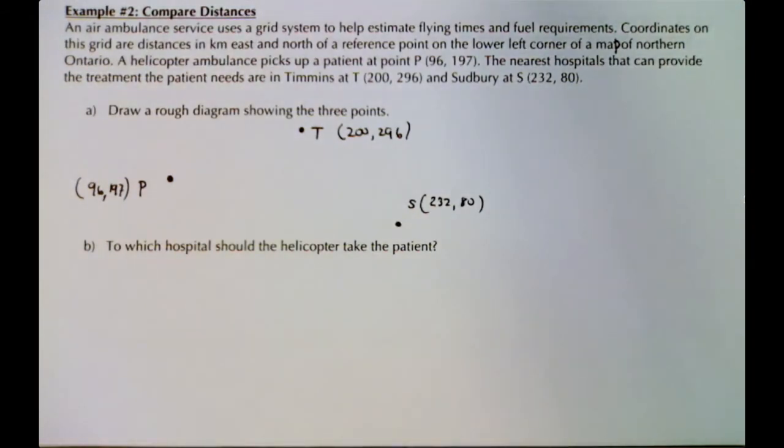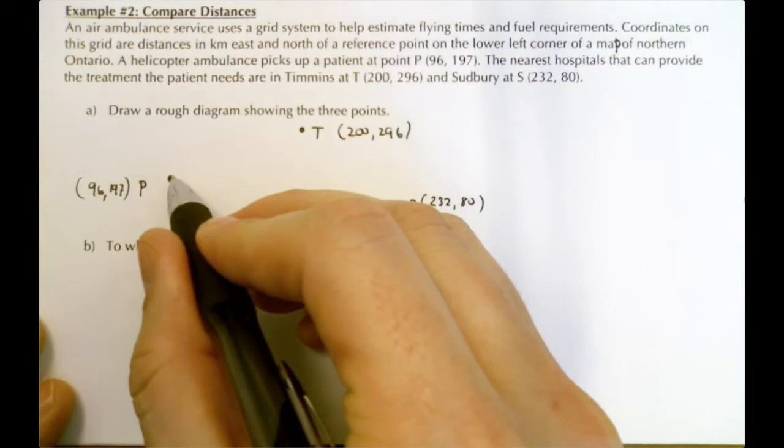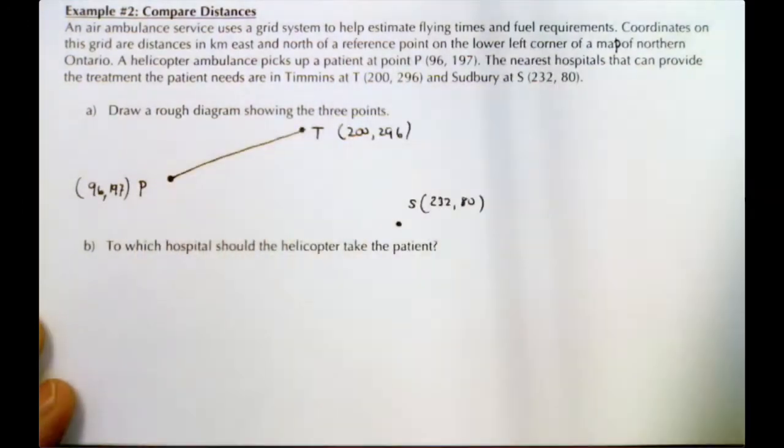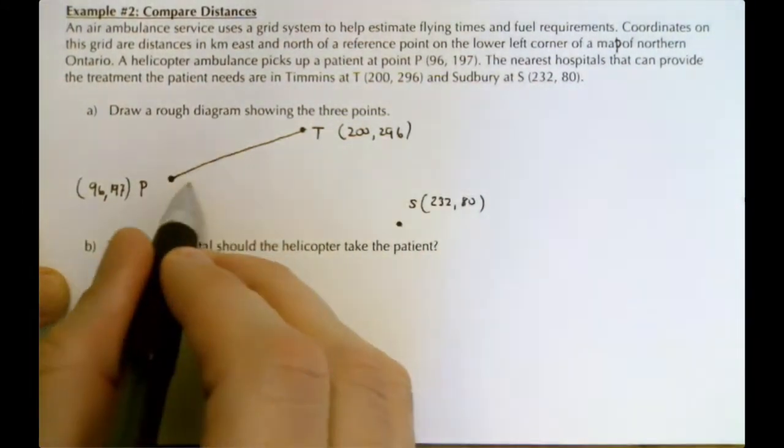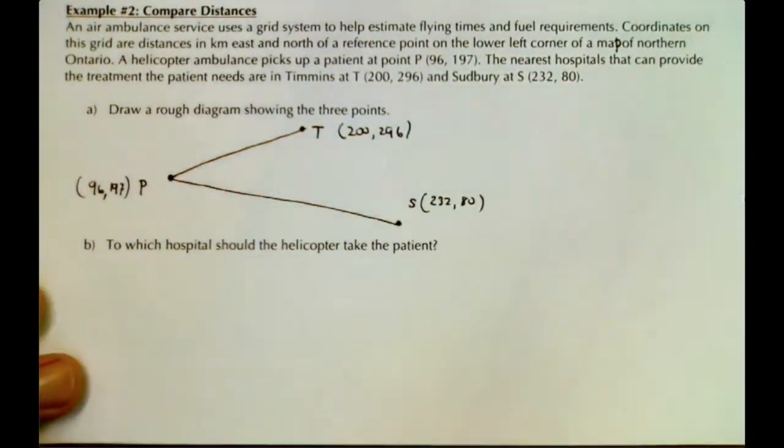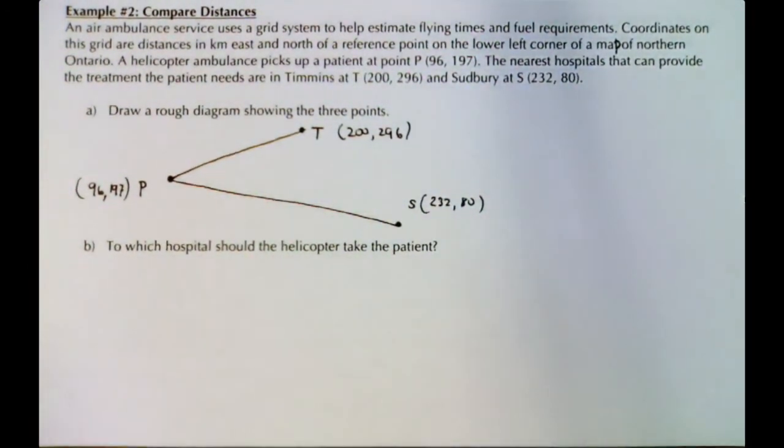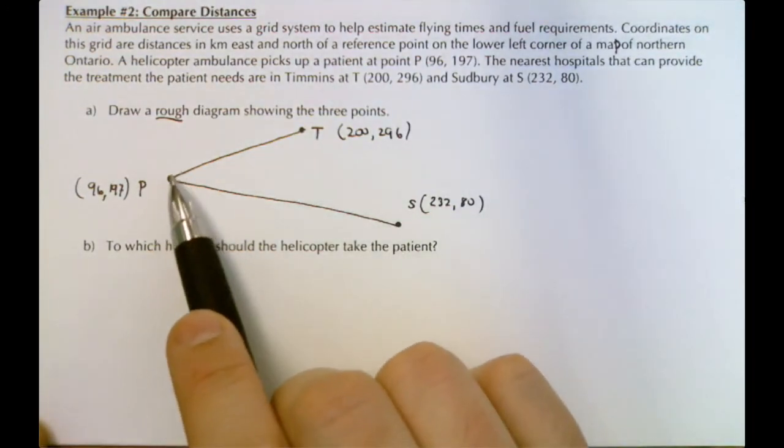Now where you graph these points, it's all relative, it's not accurate, it's just to show what we're doing. We're looking for the distance between P and T and the distance between P and S, because we want to find out which one's closer. It says rough diagram, but let's find these distances.